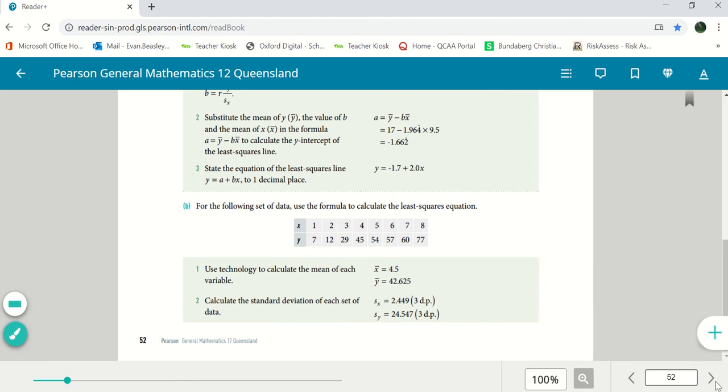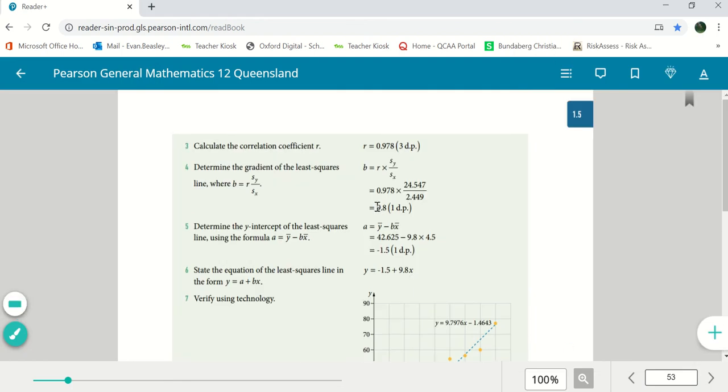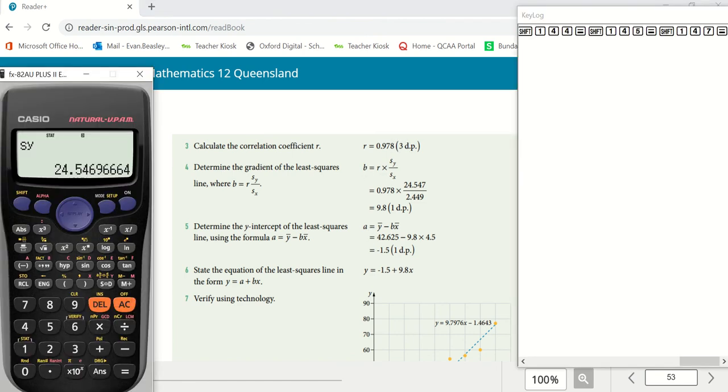We'll just pop over the page and we can also retrieve our correlation coefficient, our a value and our b value too. This is where we go to shift one and we go to our regression.